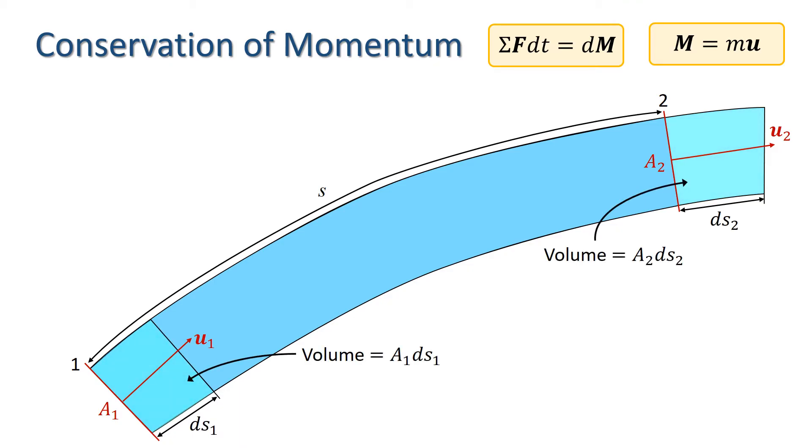In time dt the fluid will travel a distance ds1 at cross section 1 and ds2 at cross section 2. This gives us two elemental volumes of fluid A1 ds1 and A2 ds2 at either end of our stream tube from which we can calculate the change of momentum in time step dt.